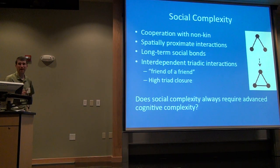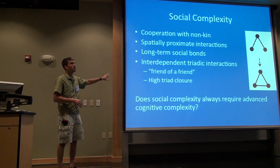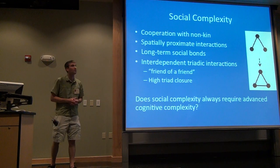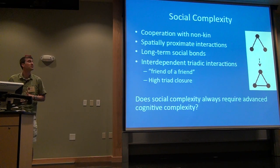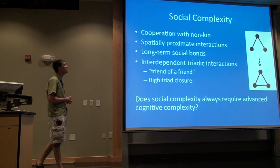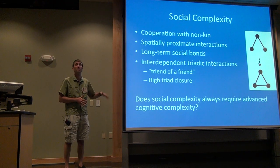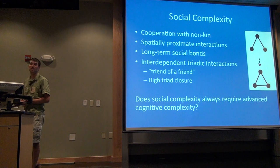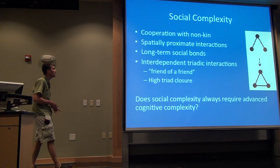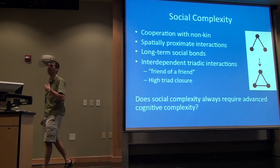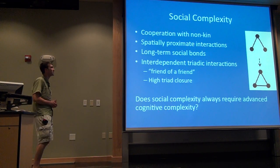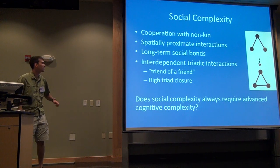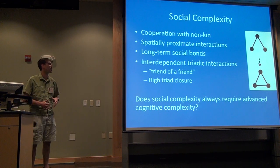So what is social complexity? It's a little bit vague — there's no specific definition. But when we look at these different societies we typically think of as complex, we see certain hallmarks. We think of cooperation being very common, often with non-kin as well as kin. Space is very important to who you interact with — typically these are spatially proximate interactions, although in humans we're moving beyond this with the internet and long-distance communication. Long-term social bonds are also very important. We tend to interact with the same individuals over our lifetime again and again. And from the social network literature comes this idea of interdependent triadic interactions being very important as well.